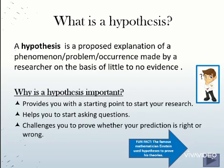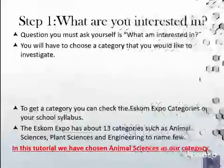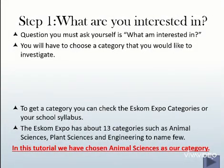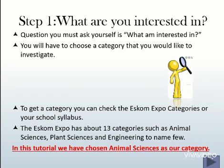The first of the five easy steps is to consider what you are interested in. You will have to choose a category that you would be interested in investigating. To find a topic, you can go through the ESCOM Expo category list or refer to your school syllabus for inspiration. In our example, we have chosen animal sciences as our category.